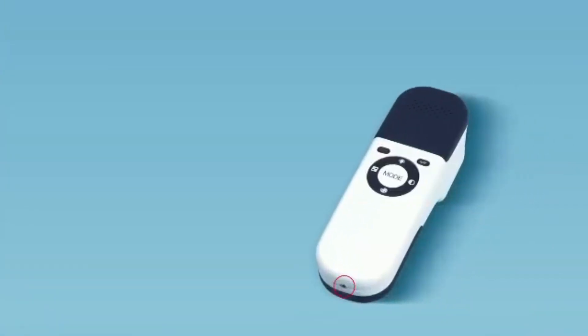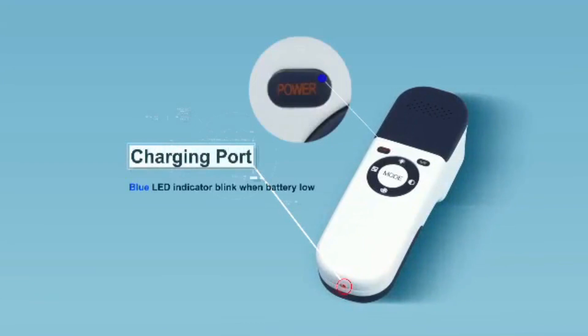Blue LED indicator on power button blinks when battery is low. Connect the charger to AC power and insert the charging cable into the bottom port. The indicator turns red when charging. When battery is fully charged, the indicator turns green.